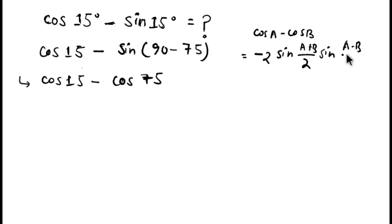So we apply this formula here and we can write it as -2 sin((A+B)/2) times sin((A-B)/2), which means -2 sin((15+75)/2) times sin((15-75)/2).